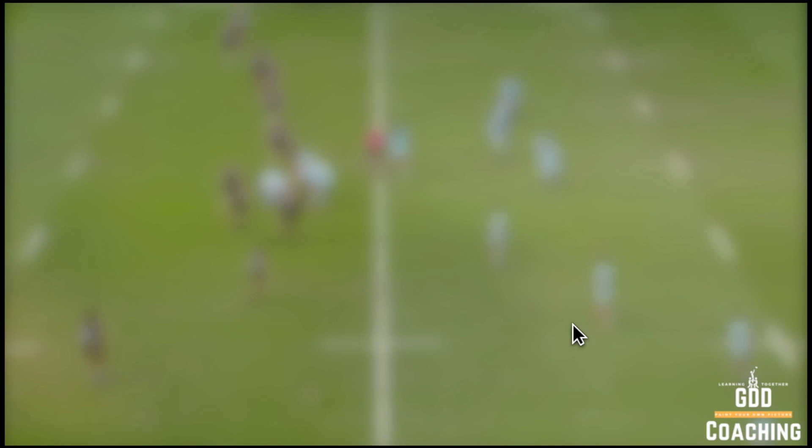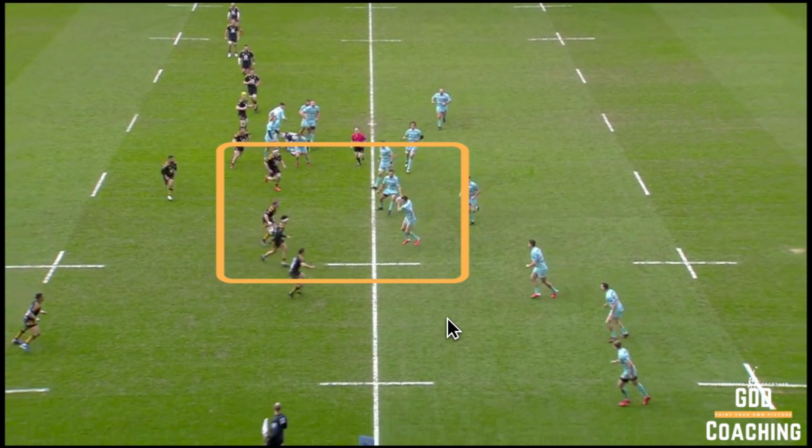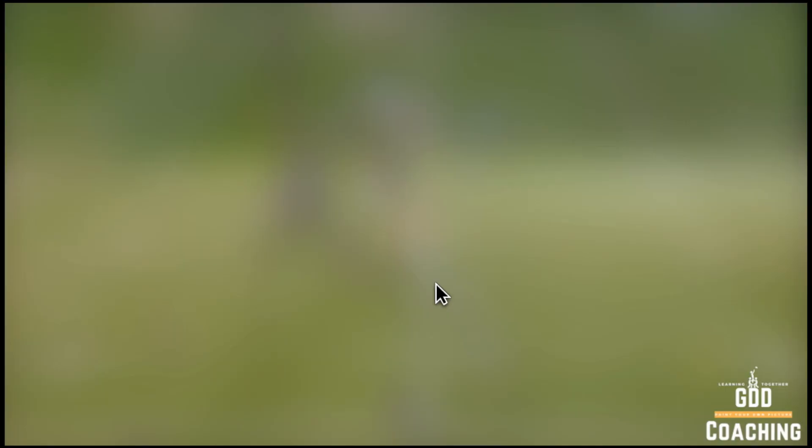Have a look at that again within a 1v1 scenario in a slightly different match — Wasps against Gloucester. We've got the ball carrier and a disconnect in the defensive line that creates another 1v1. As we play that through, you can see that the players haven't used the same kind of footwork behavior to get through.